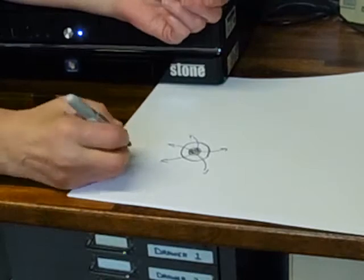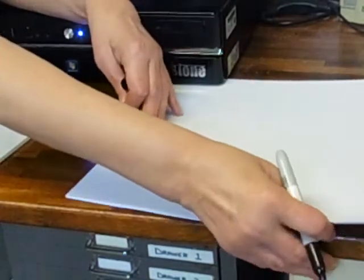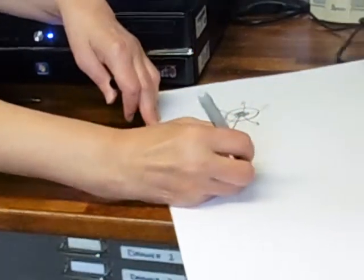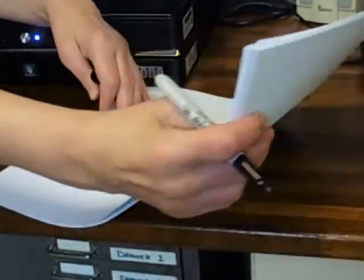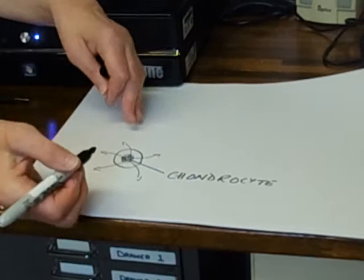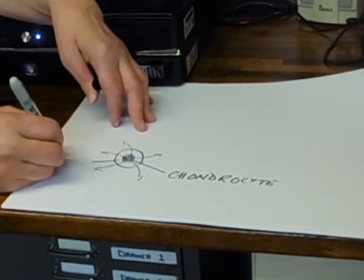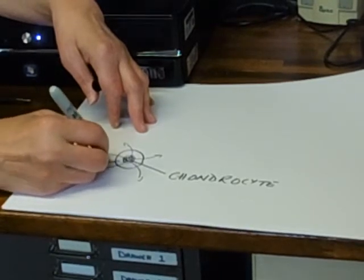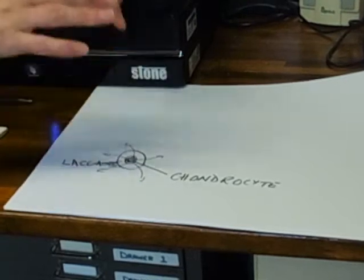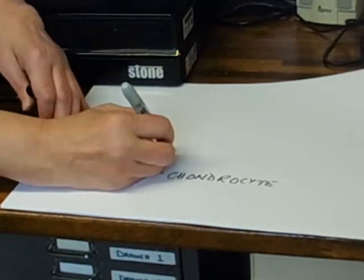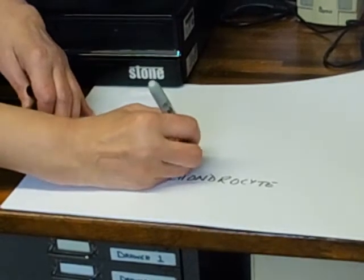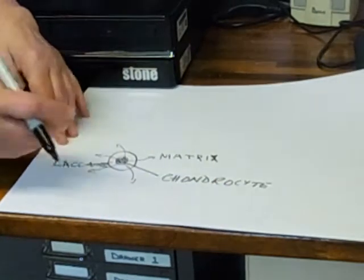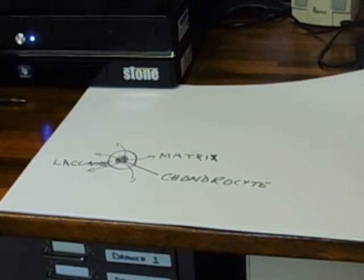All cartilages have that in common. 'Cyte' just means cell, and 'chondro' refers to cartilage — so the chondrichthyes are the sharks, with their entire skeleton made out of cartilage. We've also got lacunae, which are the little spaces around the cells, and what the cells are secreting is this matrix. That's a fairly typical skeletal system event: cells inside lacunae producing a matrix.